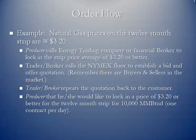The trader or broker gets the quote and repeats it back to the customer. The producer decides the market is somewhere around $3.20, and says he or she would like to lock in a price of $3.20 or better for the 12-month strip for 10,000 MMBTUs a day — that represents one contract a day for the entire month. So in essence, they're going to be selling 365 contracts.